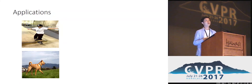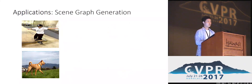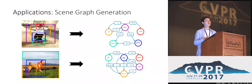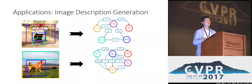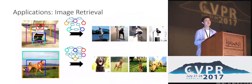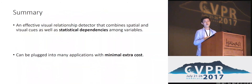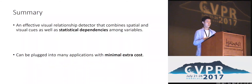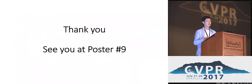Our method can be used in many higher-level applications. For example, it can be used to extract scene graphs from images, which are structural representations of the original images. In summary, our method is an effective visual relationship detector that combines spatial and visual cues as well as statistical dependencies among the components of the triplet. Since our method depends on state-of-the-art object detectors which already exist in many systems, it can be plugged into many applications with minimal extra cost. If you are interested in more details, you can reach me at poster number 9. Thank you for listening.